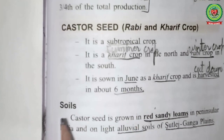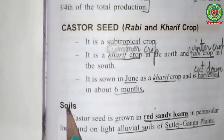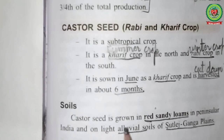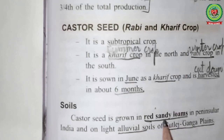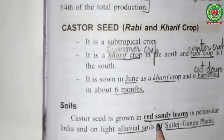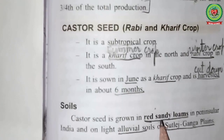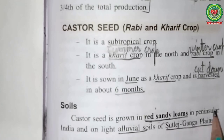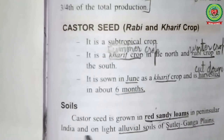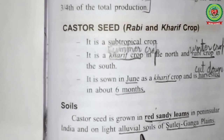Now let us go through the soils required for the growth of castor seeds. Castor seed is grown in red sandy loams — soil that contains 60% sand and only 10% clay — in Peninsular India, that is, South India, and on light alluvial soils — soil brought down by a river — in the Sutlej-Ganga Plains.